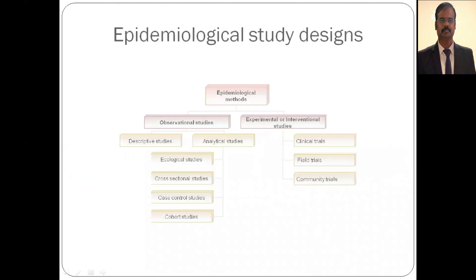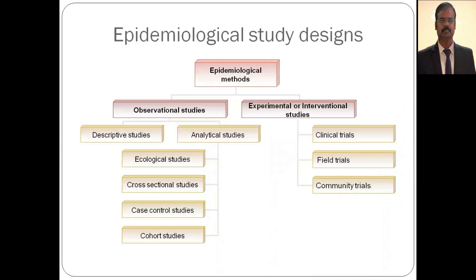Epidemiological study designs are broadly classified into observational studies and experimental studies. Observational studies are further classified into descriptive studies and analytical studies. Analytical studies include ecological studies, cross-sectional studies, case-control studies, and cohort studies. Experimental or intervention studies are classified into clinical trials (randomized controlled trials), field trials, and community intervention trials.